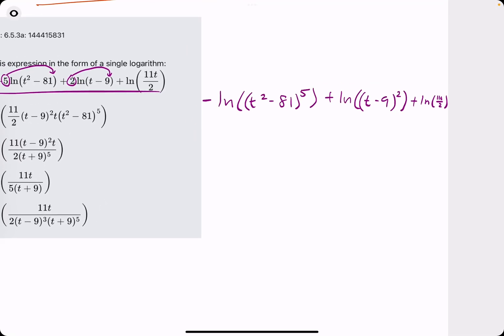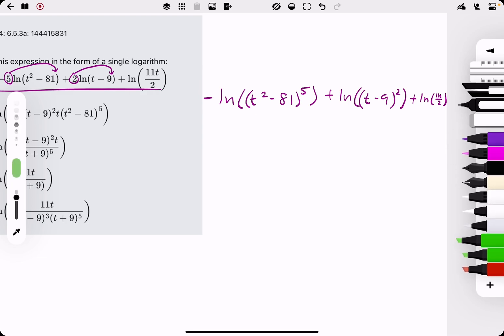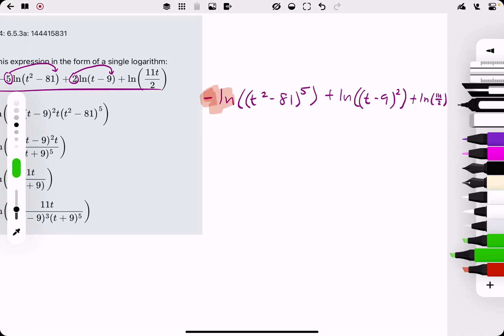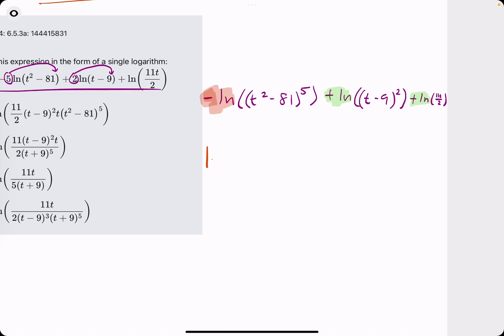Once we do that, we brought up the coefficients. And now we have a negative and a positive and a positive. So what we're going to do is identify the negative natural log, the positive natural log, and the positive natural log. The next step,